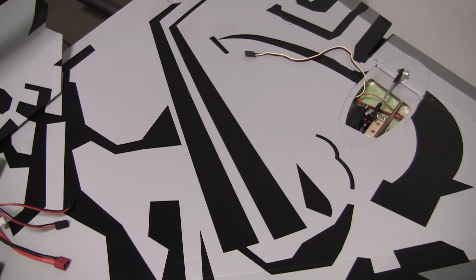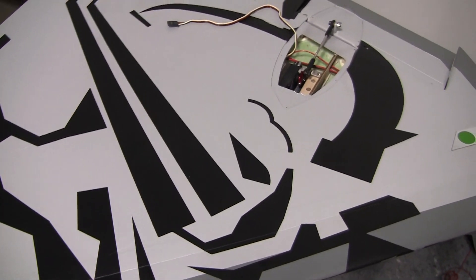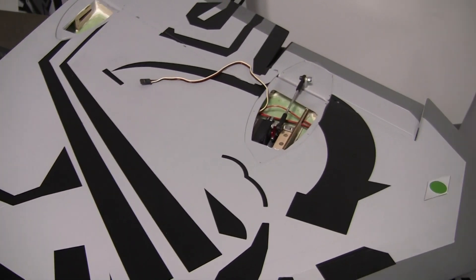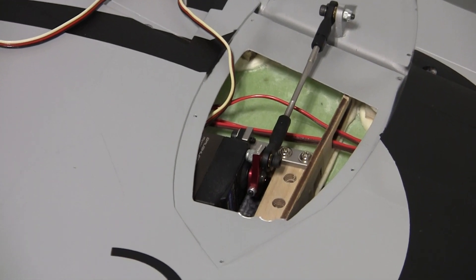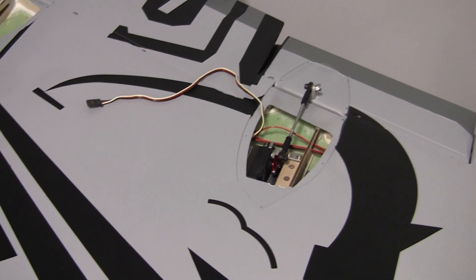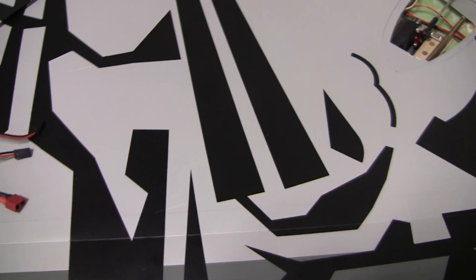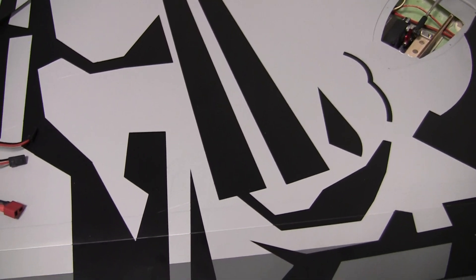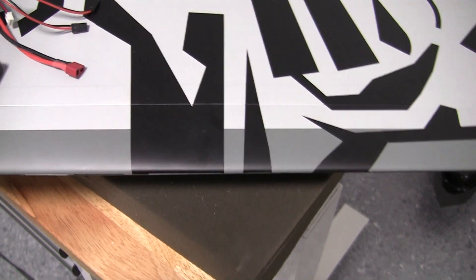All right, welcome back. Managed to get out and do a little work today, or in progress anyways. So aileron servos are in, nothing crazy there. I kind of showed all that already. I got both of them done, so I moved on to the next biggest pain thing in this jet, minus I think the rudders.